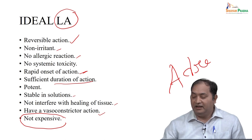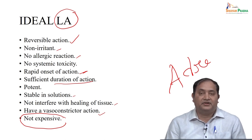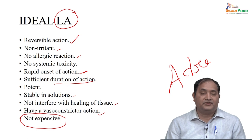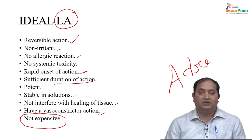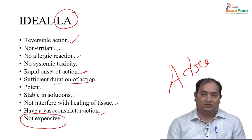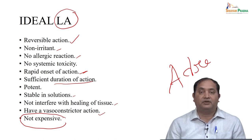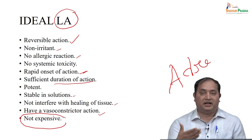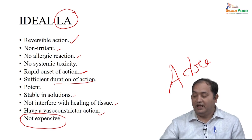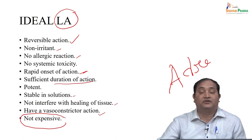Typically, to consider a local anesthetic ideal: it should be reversible, non-irritant, non-allergic, reduce systemic toxicity, have a fast onset of action, cover a sufficient duration so that you can complete a minor surgery, be stable in solution, be used along with a vasoconstrictor, and lastly it should be affordable.